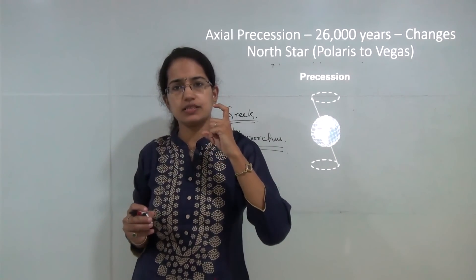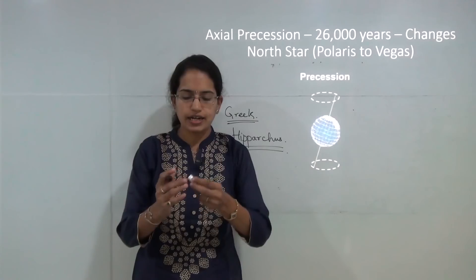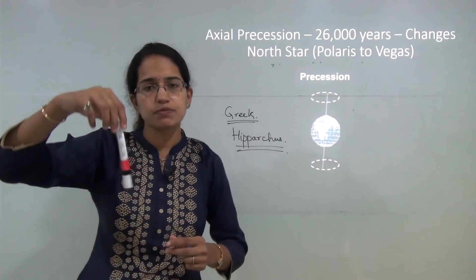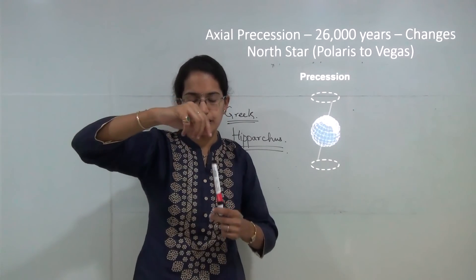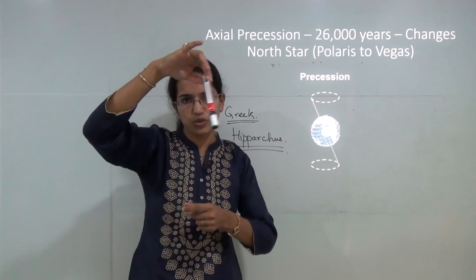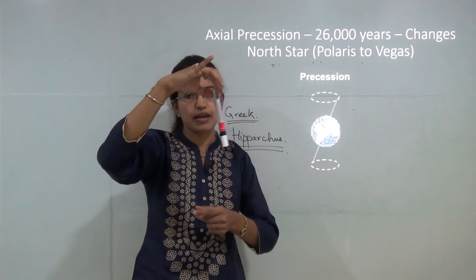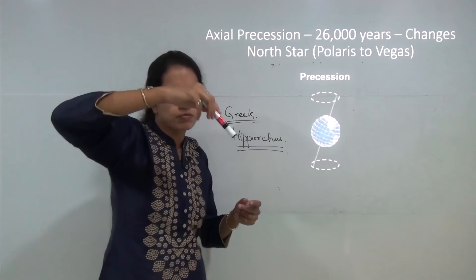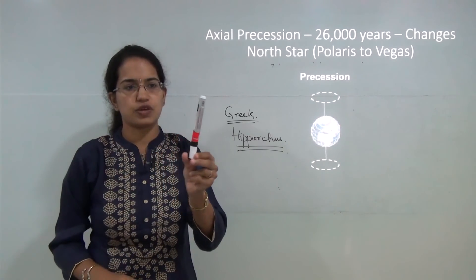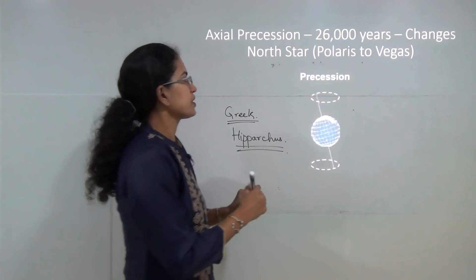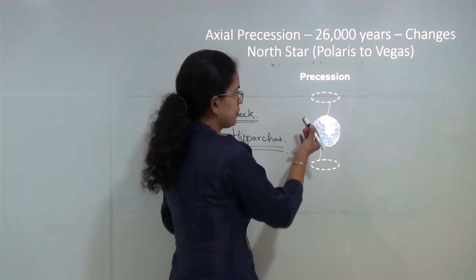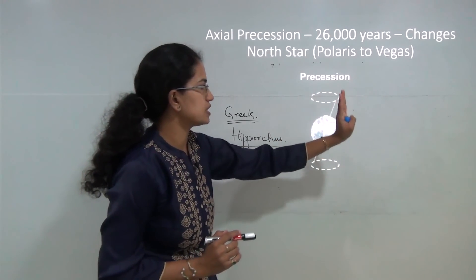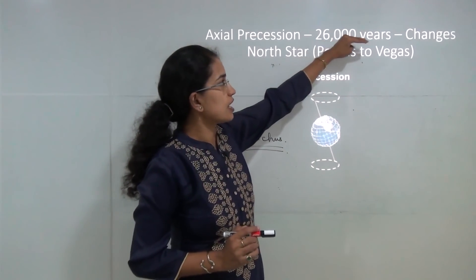Precession is a movement of the earth beyond rotation and revolution, similar to the spinning of a top. When a top spins it has a circular motion that continues for some time, and ultimately this spin wobbles. That wobbling movement — like a pen moving in a circular wobbling fashion — is precession. The axis of the earth undergoes this precession movement.